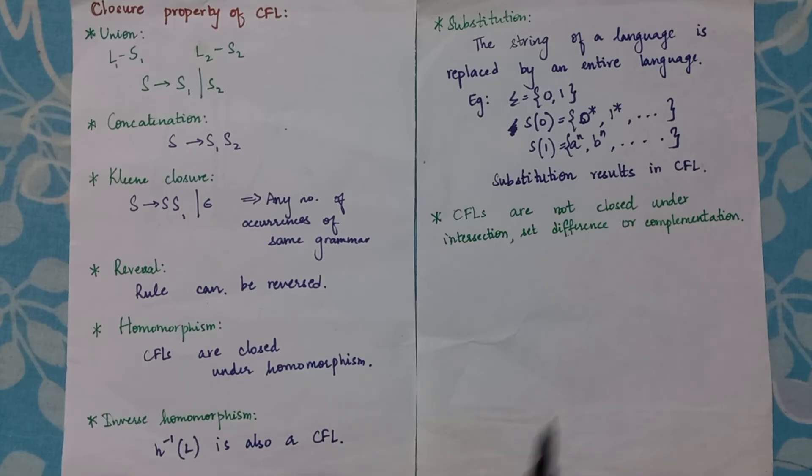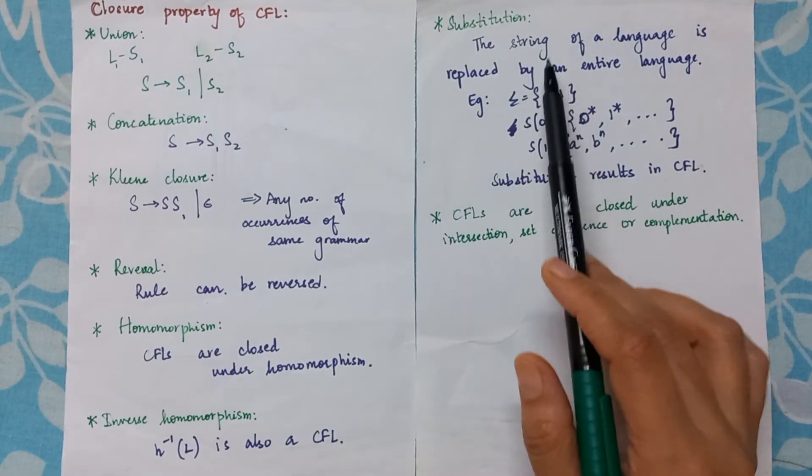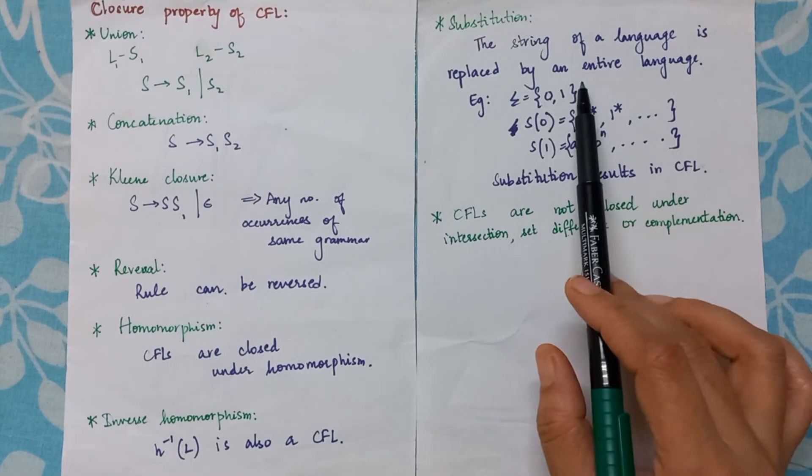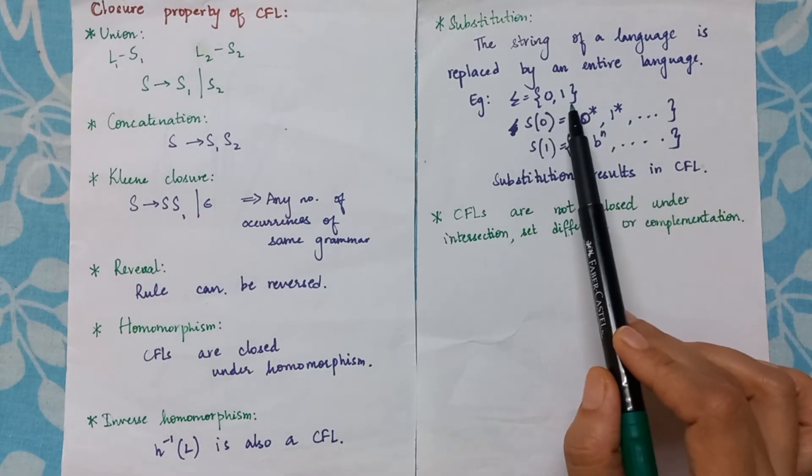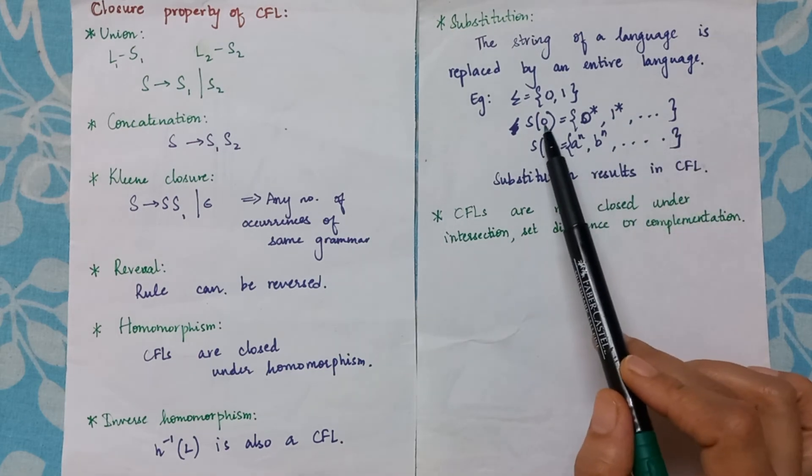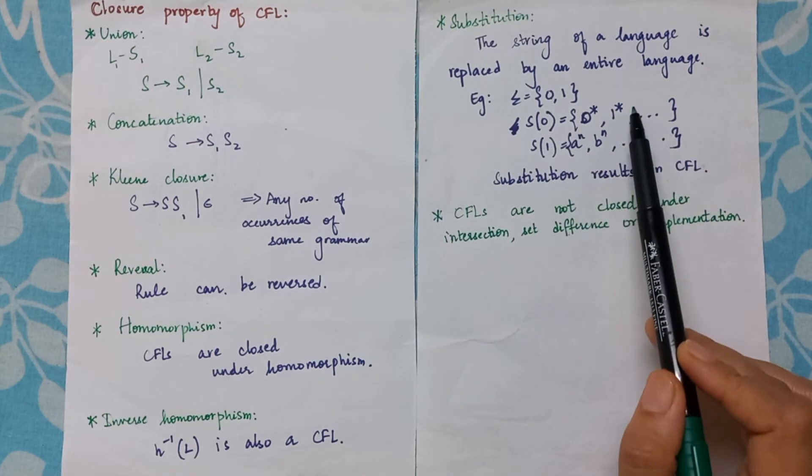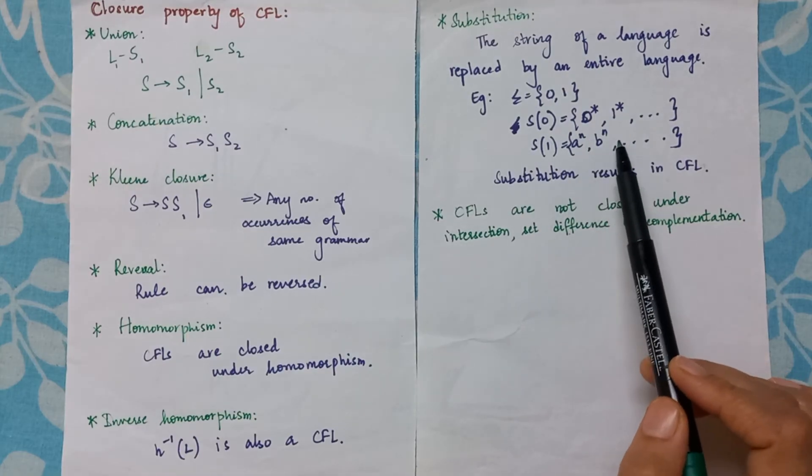Let us understand what is substitution. The string of a language is replaced by an entire language. Consider if I have these two alphabets, these will be replaced by another entire language. So s of 0 will be 0 star 1 star, and s of 1 may be a to the power n b to the power n, and so on.